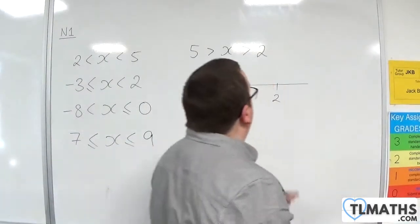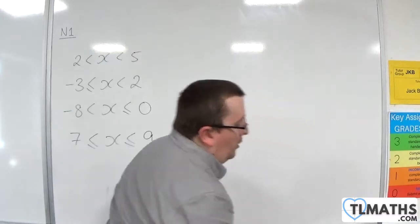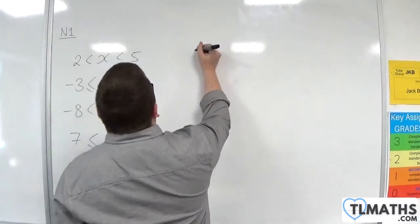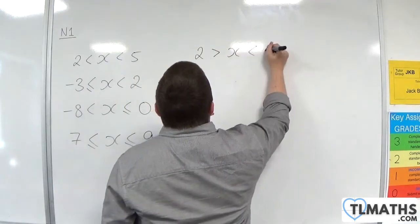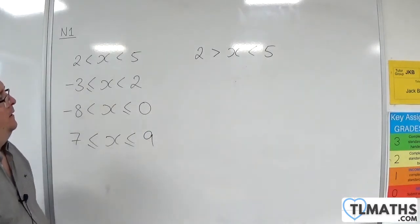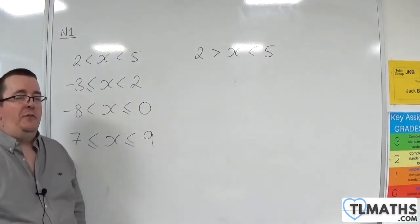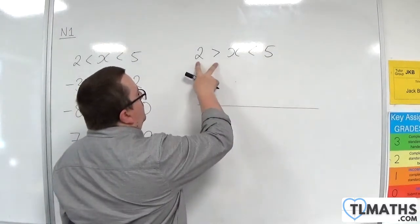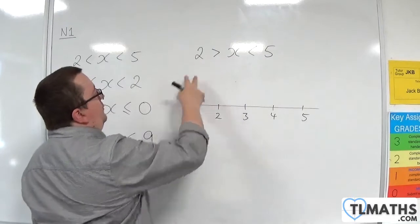So we don't ever write that. So that's that one out, we're not going to have greater thans. So if you had something like, let's say, 2 is greater than x is less than 5, what does that mean? Well, let's try it out.